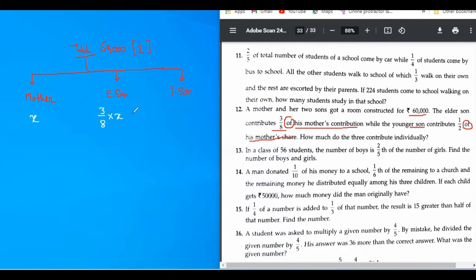And younger son contributed half of X. And now you know that together they contributed 60,000. So, can I say according to the question, ATQ,